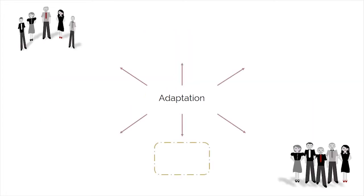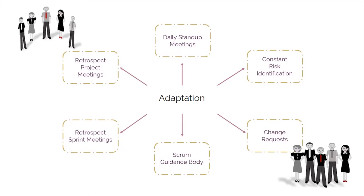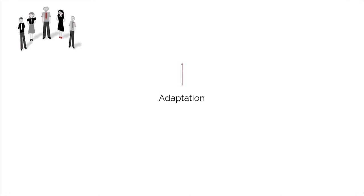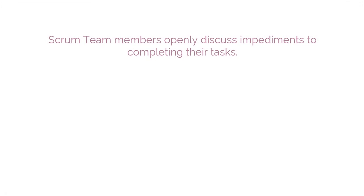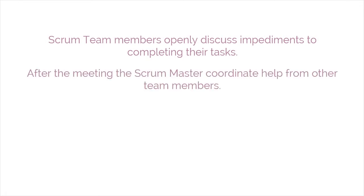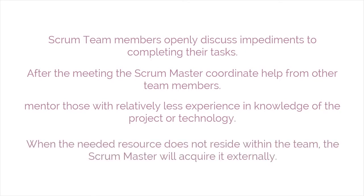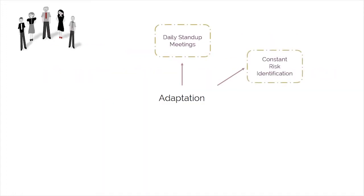The third main characteristic of empirical process control is adaptation. Adaptation happens as the Scrum core team and stakeholders learn through transparency and inspection and then adapt by making improvements in the work they're doing. Some examples of adaptation include: in daily stand-up meetings, Scrum team members openly discuss impediments to completing their tasks. After the meeting, the Scrum master coordinates help from other team members. More experienced members also mentor those with relatively less experience and knowledge of the project or technology. When the needed resource doesn't reside within the team, the Scrum master will acquire it externally.